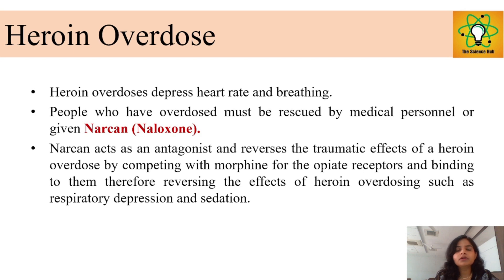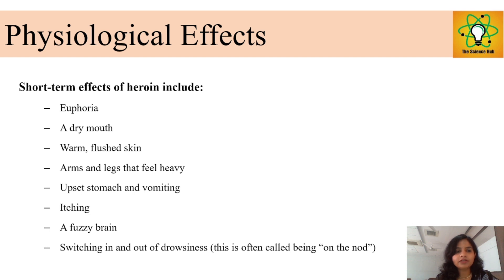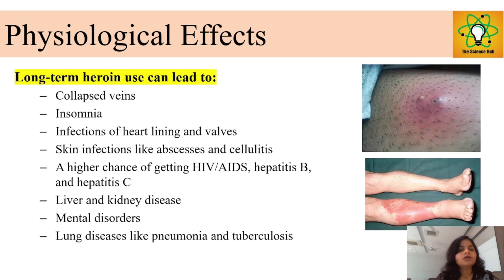Heroin overdose depresses heart rate and breathing. Doctors usually recommend a drug called Narcan, which acts as an antagonist and reverses the effects of heroin. Physiological effects of heroin include euphoria, dry mouth, warm flushed skin, heavy arms and legs, upset stomach, vomiting, fuzzy brain, and drowsiness. Long-term effects include collapsed veins, insomnia, infection in the heart lining and walls, and skin infections like abscesses and cellulitis.